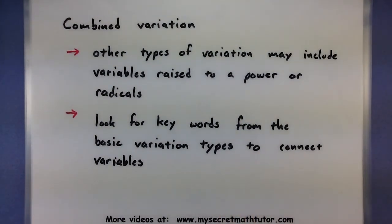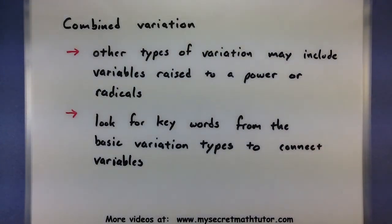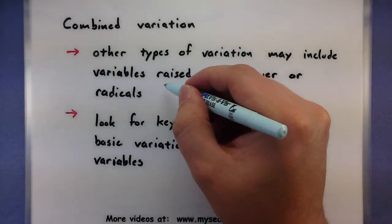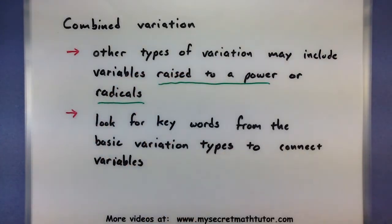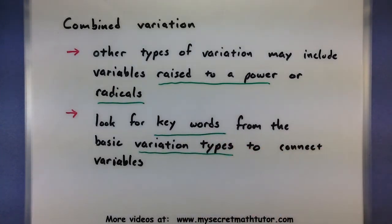Now once you have all of those three basic types, you can really start to put them together and make more complicated variation problems. And we can also mess around with the variables a little bit and include more than just a single x or a single y. In fact, you want to also think of ones that maybe have variables raised to a power, or even radicals put on your variables. To figure out how to put together something like a combined variation, you really want to start looking for keywords as to what type of variations are being used. So look for those little basic types like direct variation or inverse variation, so you know whether to put your variables on the top or on the bottom of a fraction.